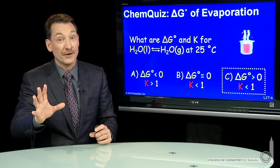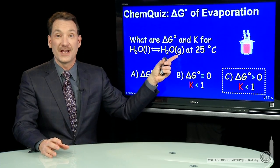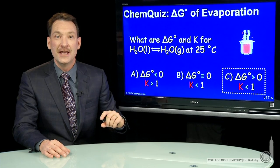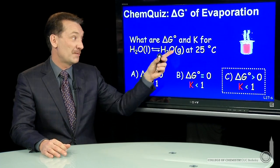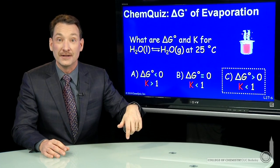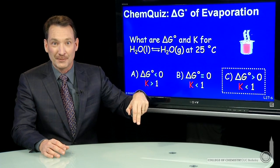You also might have remembered that the equilibrium constant for this reaction at 25 degrees C is the vapor pressure for water at 25 degrees C. The vapor pressure for water at 25 degrees C is less than 1 and it's equal to the equilibrium constant.